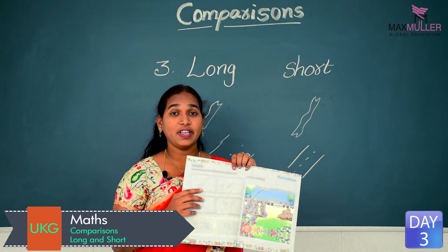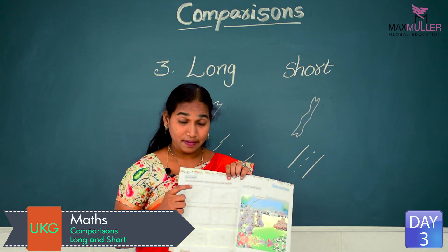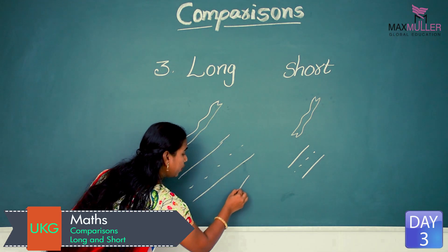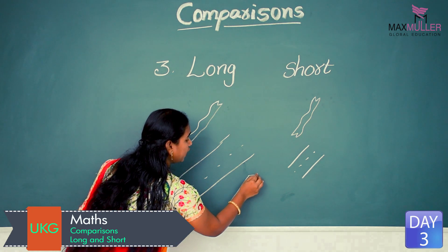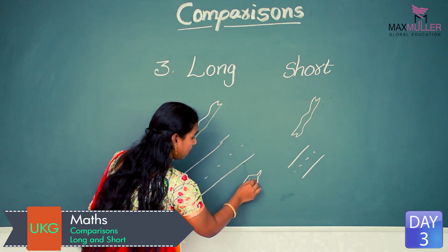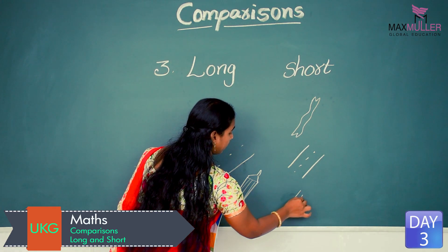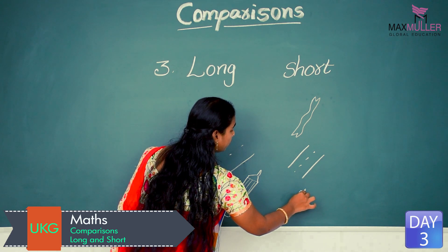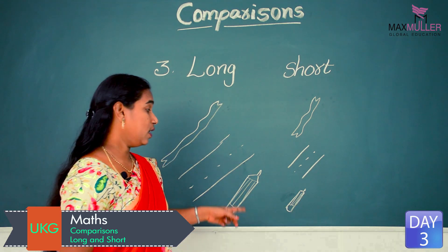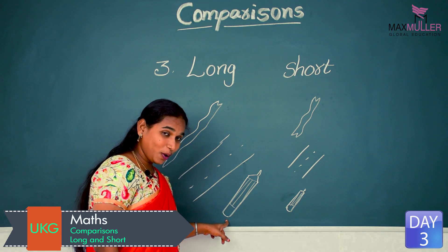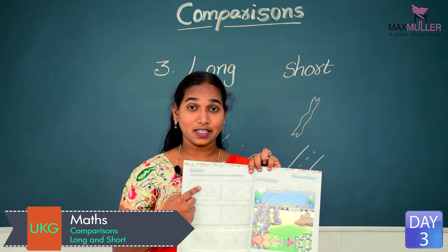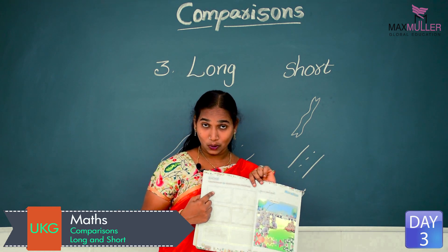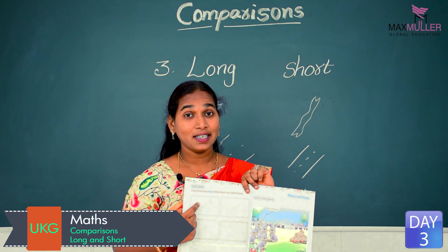Orange — the short one we have to color with orange, and the long one we will color with blue. So here we have two pencils. You have to find out which is big or small — which one is long. This one is the long pencil. So see the picture and find out which one is long, then take the blue color and color the long pencil.